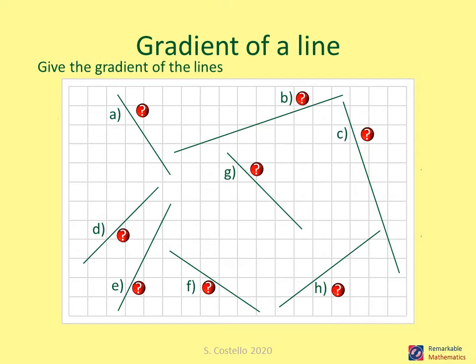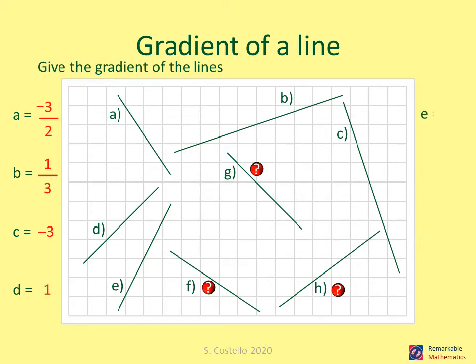Pause the video, work out the gradients of each of the lines shown, then restart to check your answers. The answers: A is minus three over two, B is minus one over three, C is minus three, D is one, E is two, G is minus two over three, G is minus one, and H is three over four.